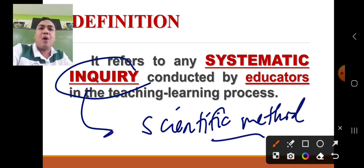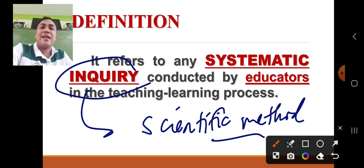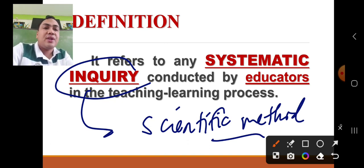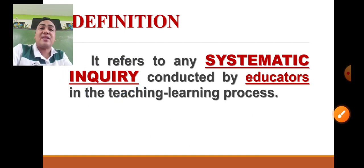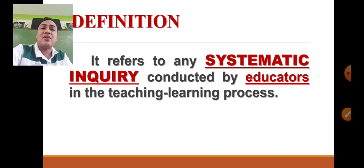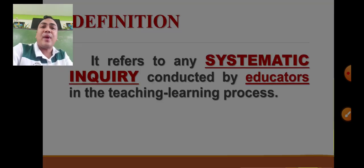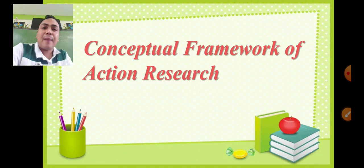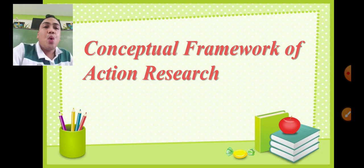Based on prior knowledge, the scientific method consists of a step-by-step procedure organized in a scholarly way. Through action research, we can apply these steps of the scientific method, just like other types of research, and these steps relate to the conceptual framework of action research.